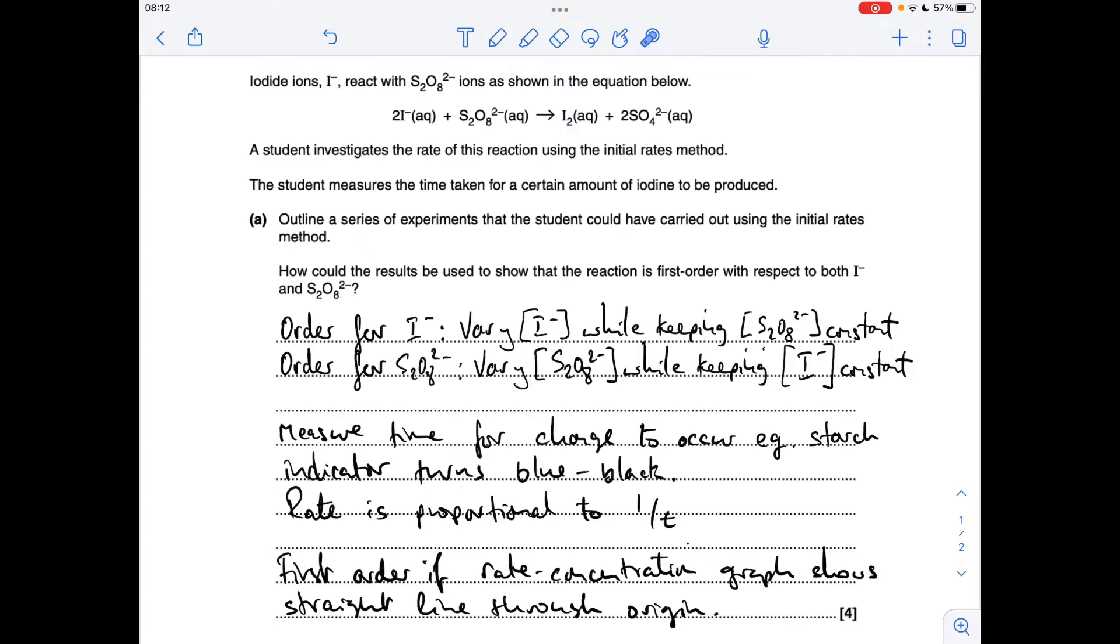So simply, all you would need to say, to get the order with respect to I-, you would vary the I- concentration, keep the other one constant, and then for the other one, you just do the opposite.